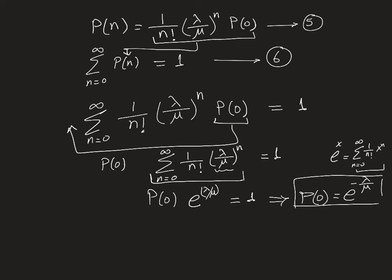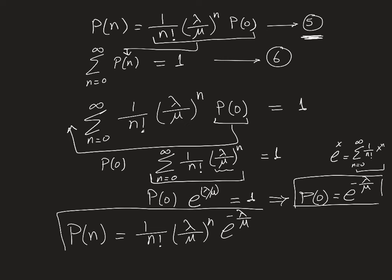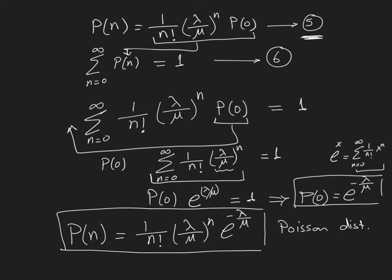Substituting p(0) = e^(−lambda/mu) back into the general formula gives p(n) = (1/n!) * (lambda/mu)^n * e^(−lambda/mu). This is exactly the Poisson distribution — the state distribution follows a Poisson distribution, which is a special result that holds when the number of servers goes to infinity.